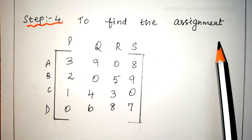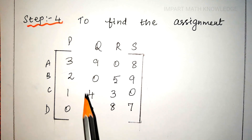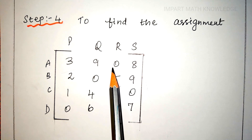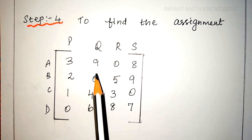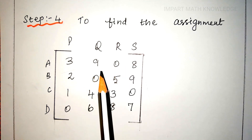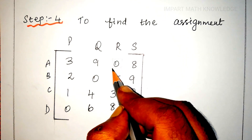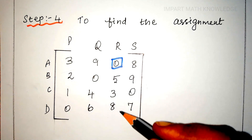Next step, we have to find the assignment by performing row scanning. In the first row, there is exactly one zero, so we mark a square around that zero and draw a vertical line passing through it. In the second row, there is also exactly one zero, so we put a square and draw a vertical line through that zero.